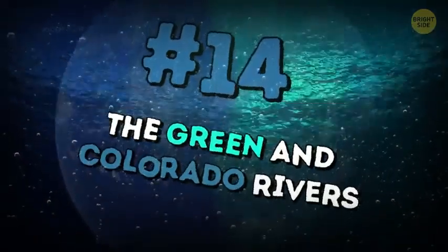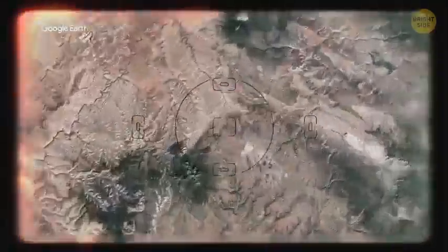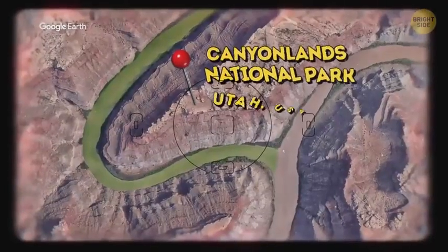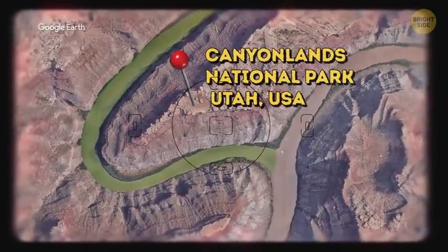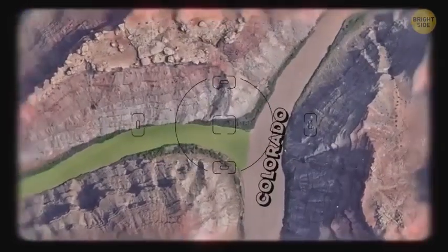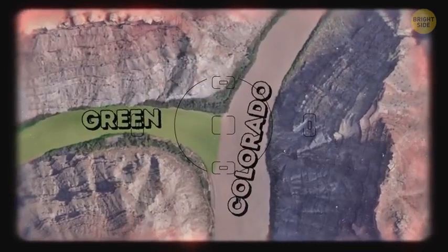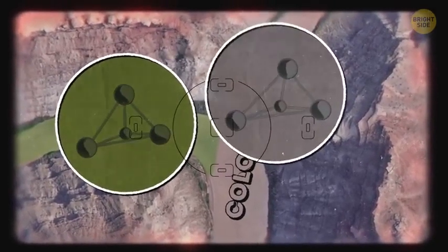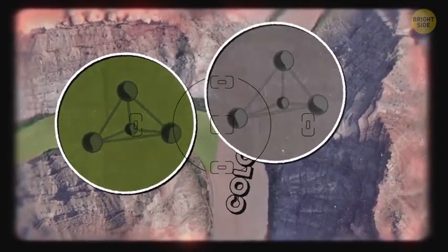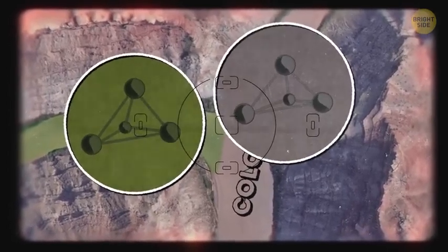The Green and Colorado Rivers. The place of their junction is Canyonlands National Park in Utah, USA. Colorado is brown, and green is… yep, green. The colors of these rivers go through rocks with different chemical makeup. That's why they have such a big contrast of colors.